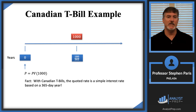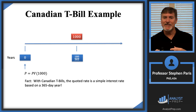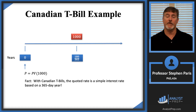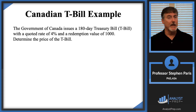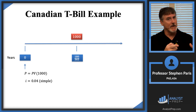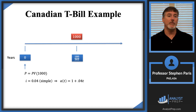So 180 divided by 365 is the time at which this T-bill matures. Now let's go back to the question. The next thing to focus on is that the quoted rate — the 4% figure stated in the problem — is a simple interest rate. So I know that's a 4% simple interest rate, and my timeline uses i = 4% simple interest. Once I have that information, I know what the accumulation function is.